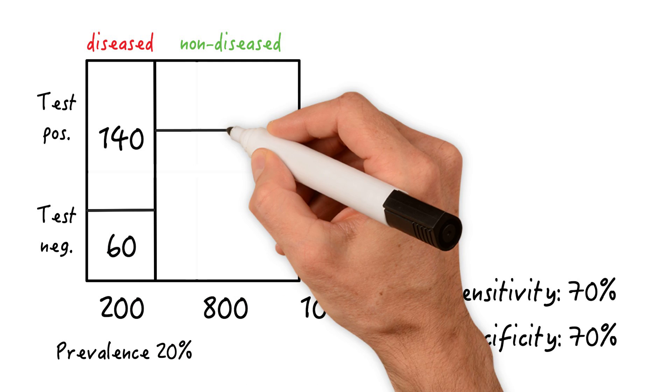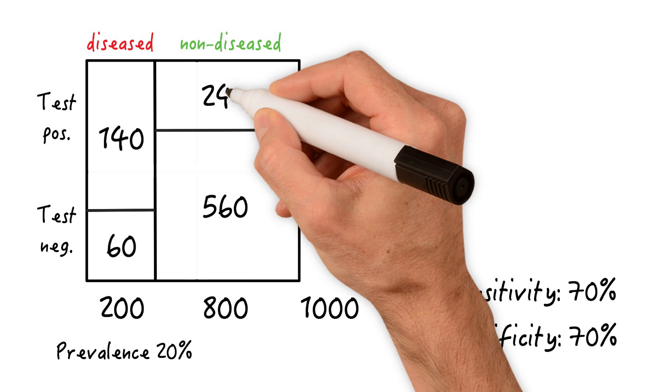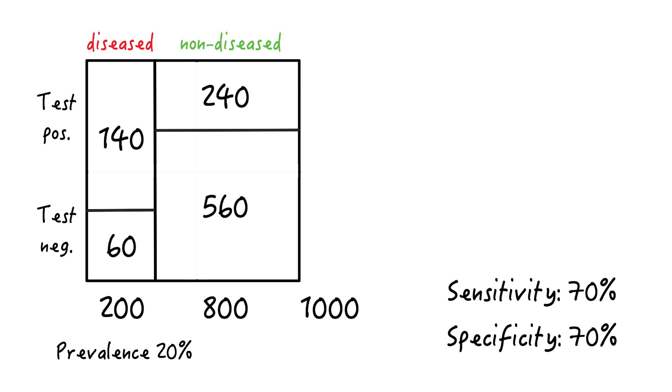Similarly, 70% or 560 of non-diseased will be picked up, whereas 240 will be falsely classified as diseased. Overall, we have 380 folks who tested positive, 140 true positives and 240 false positives.